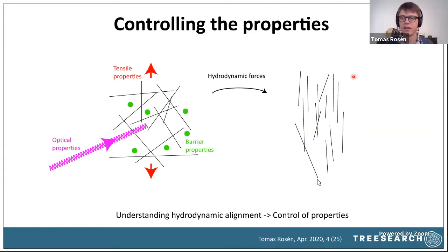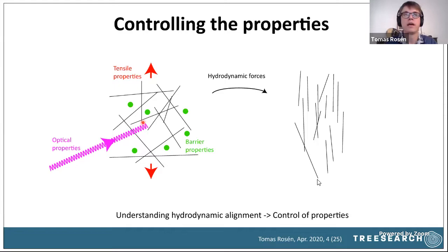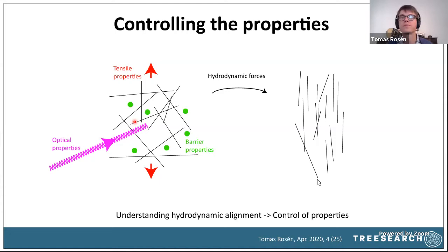The aim is always the same: by changing the nanostructure you can change the material properties. These can be optical properties — how the material interacts with light in terms of transparency or polarization — or mechanical, changing tensile properties and resistance to deformation. Or if used as a barrier, the nanostructure determines what constituents can pass through the network. By changing the nanostructure using hydrodynamic forces during the process, we can control final material properties.